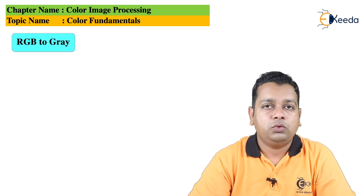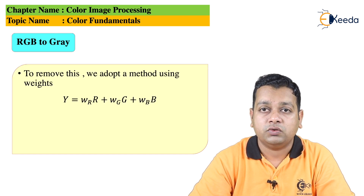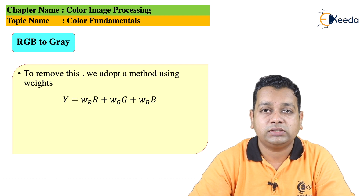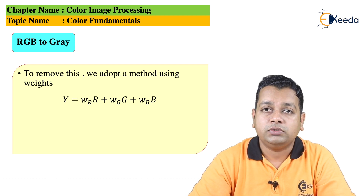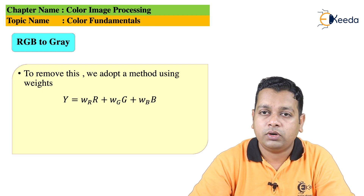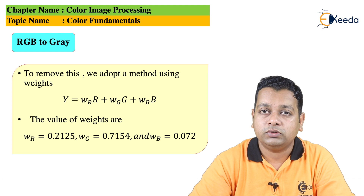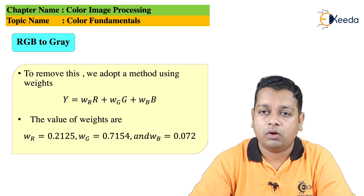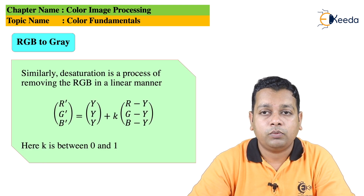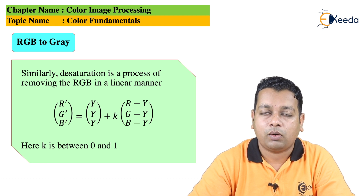To remove the too-dark and too-bright artifacts, a weighted RGB-to-gray conversion is used: Y = w_R × R + w_G × G + w_B × B, where w_R = 0.2125, w_G = 0.7154, and w_B = 0.072. Similarly, desaturation is a process of removing RGB content in a linear manner: the R', G', B' components are obtained by a computation involving a parameter k, where k is between 0 and 1.